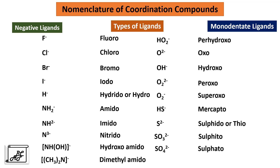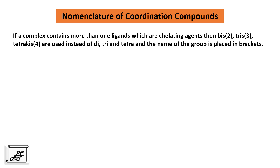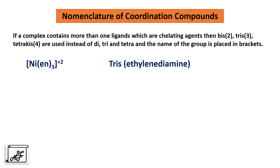If there are bidentate or polydentate ligands — also called chelating agents — and a complex contains more than one of these chelating ligands, then we use bis for two, tris for three, and tetrakis for four, instead of di, tri, tetra. The name of the group is placed in brackets. For example, 'en' is the abbreviated form of ethylenediamine, so three ethylenediamine molecules are named as tris(ethylenediamine). Remember: whenever chelating agents are present, use bis, tris, and tetrakis — not di, tri, or tetra.